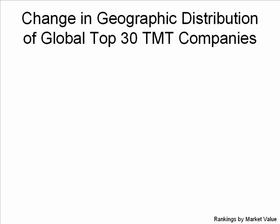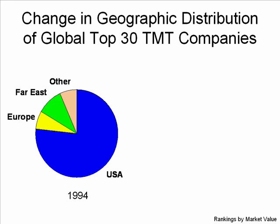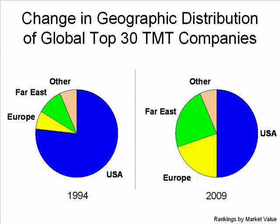Here's the new slide. I want to talk about the change in the geographic distribution of the top 30 companies by market value. When we look back in 1994, this was the distribution — very heavily weighted towards companies based in the United States. But in 2009, the situation has changed dramatically. Yes, the USA is still the largest segment, but it now constitutes only half of the top 30, as opposed to before, where it constituted more than three quarters. So when looking at what regions to consider, we cannot focus on the USA alone — investors and analysts need to consider outside of North America as well.